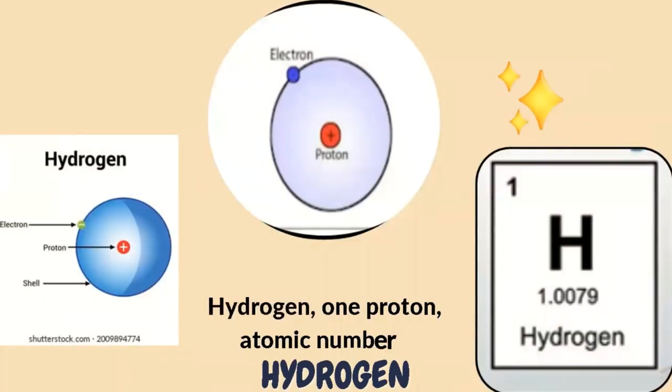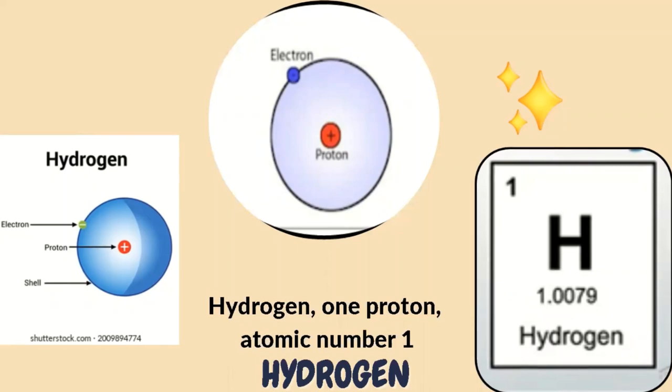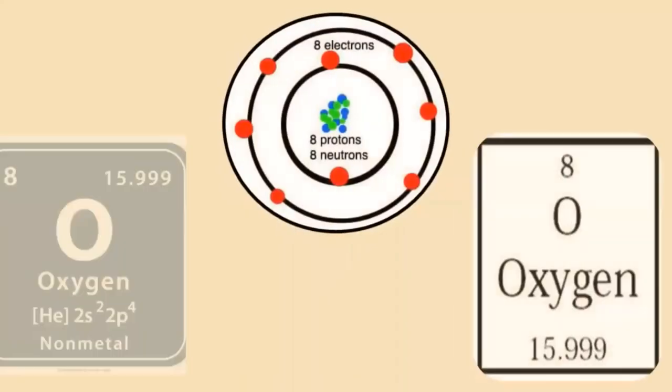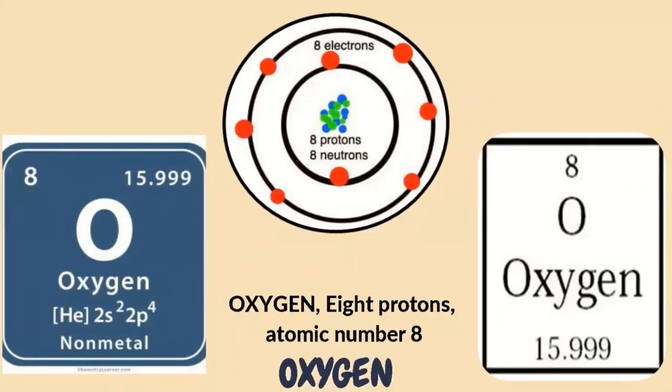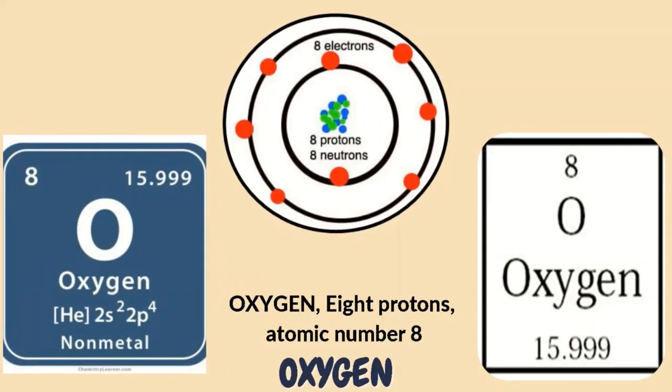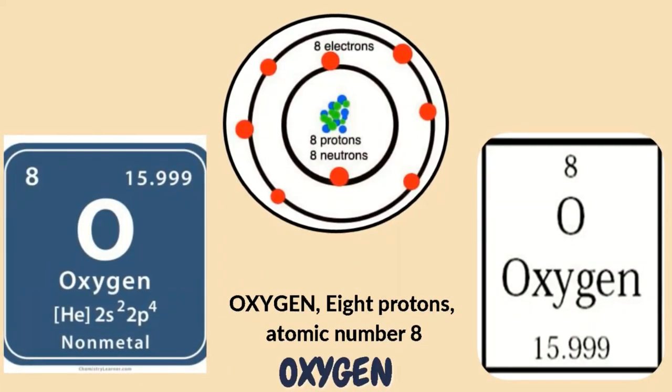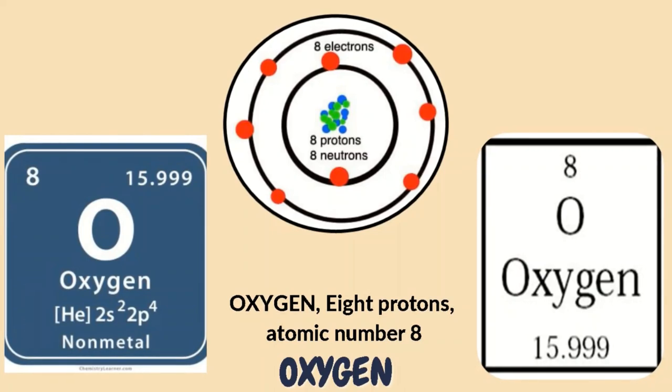For example, hydrogen is one proton, therefore atomic number of hydrogen is one. Oxygen, eight protons inside the nucleus, therefore atomic number is eight.